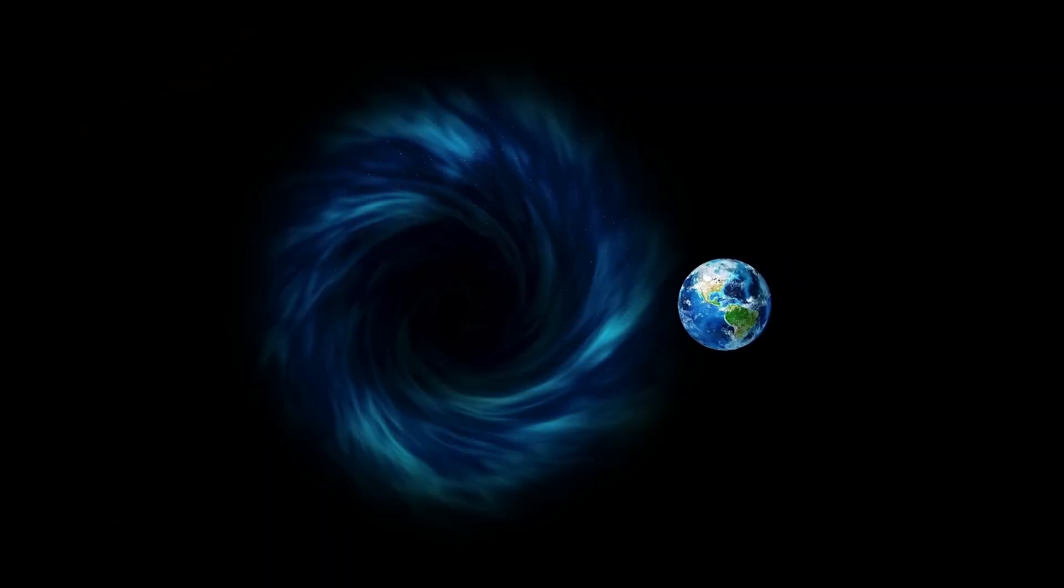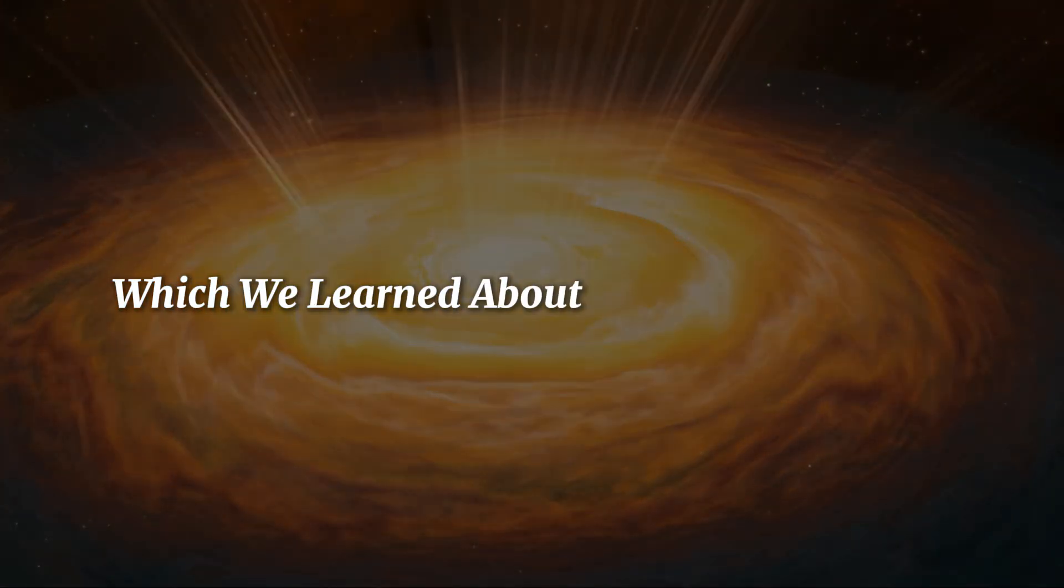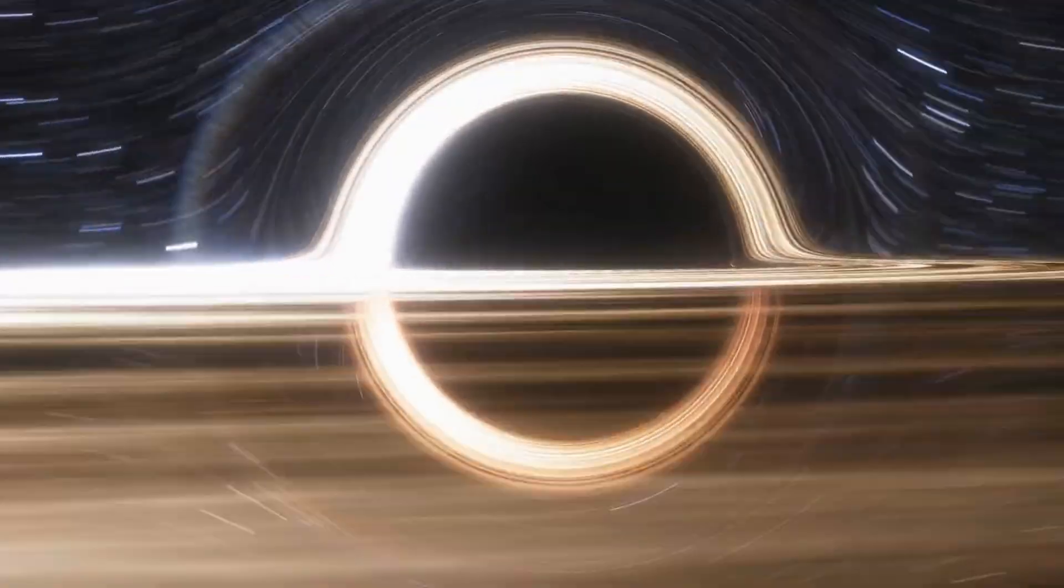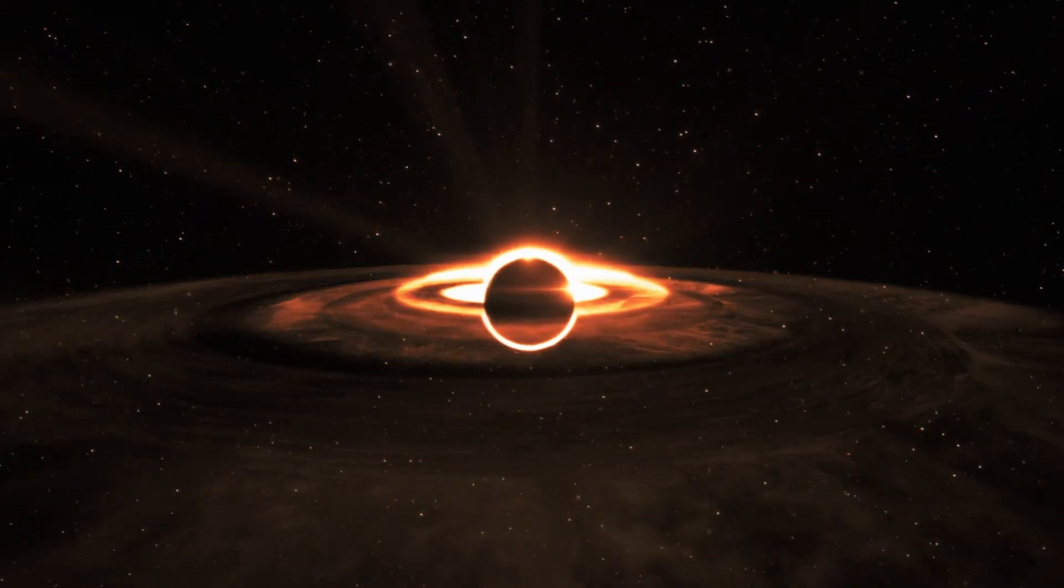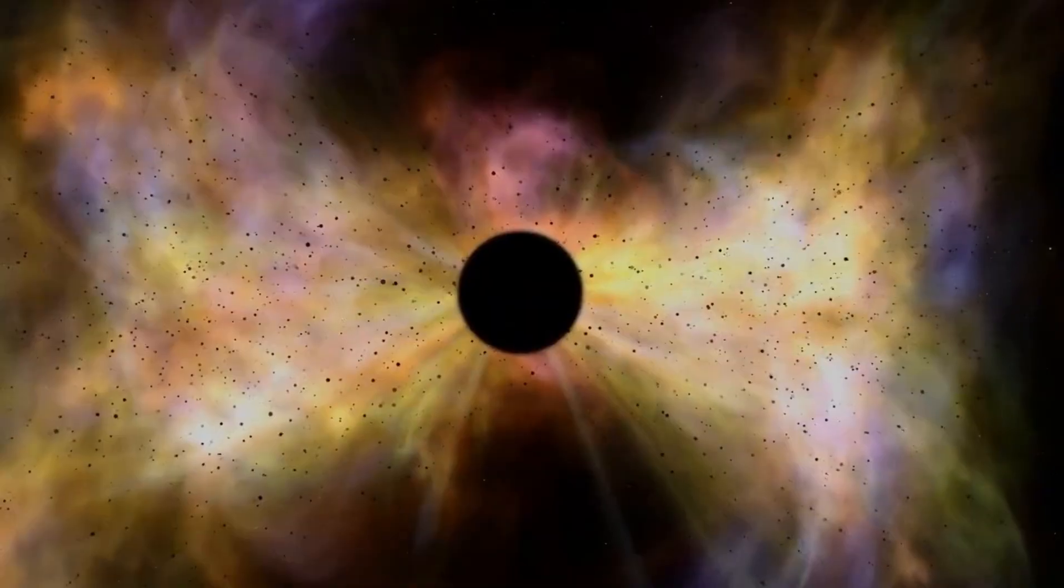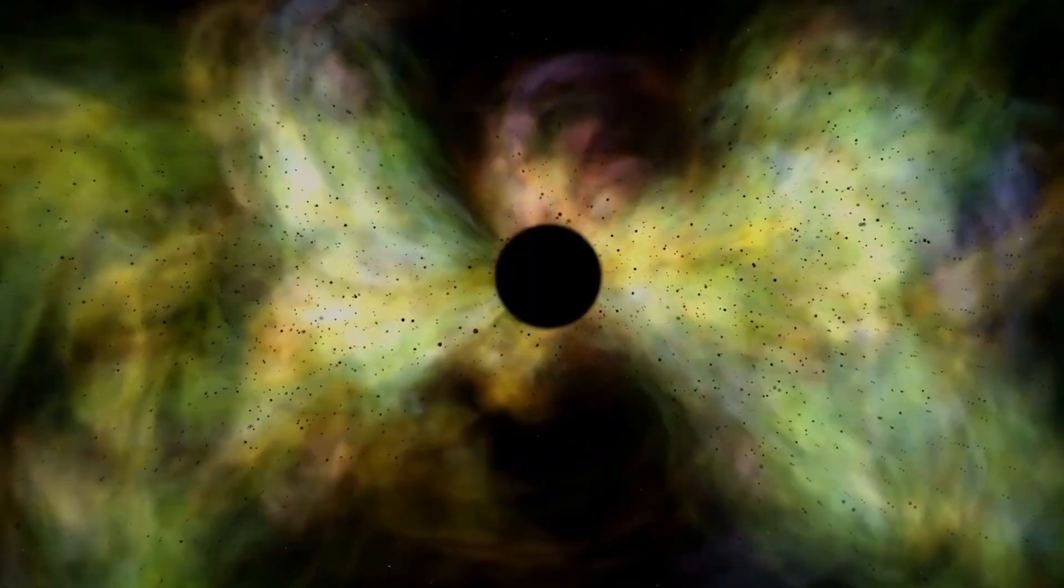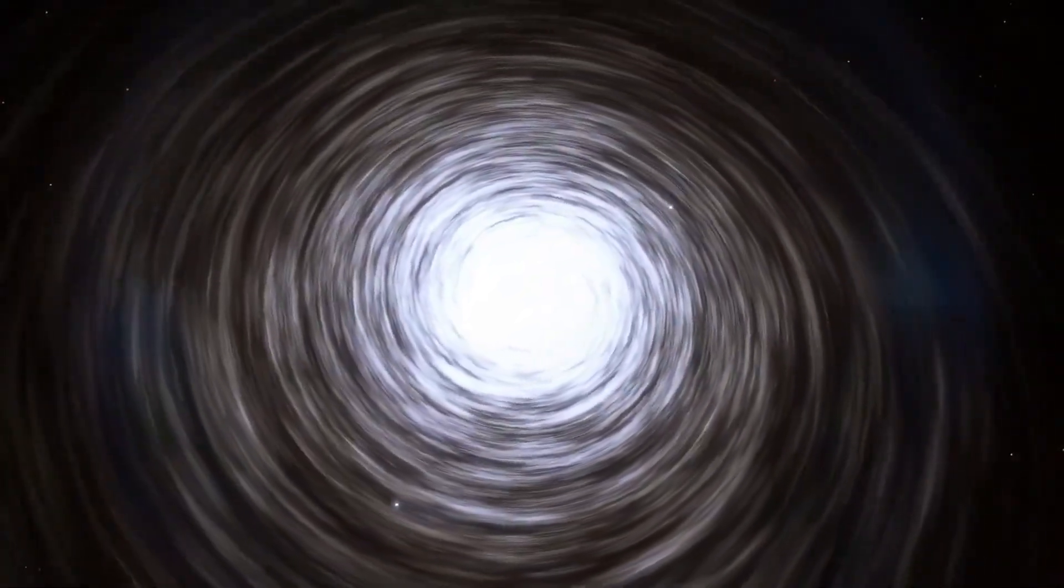In fact, the most energetic objects in the universe, quasars, which we learned about in our last episode, are powered by supermassive black holes feeding on cosmic material. But here's where it gets wild. Even though we call them black, black holes can shape the visible universe. When they feed, they release gigantic jets of radiation and plasma, stretching thousands of light years into space. These jets can trigger new stars to form and influence how entire galaxies evolve.